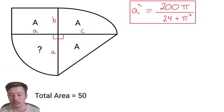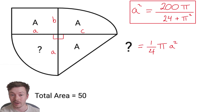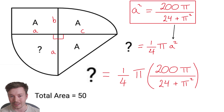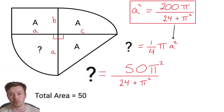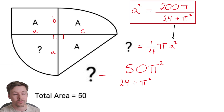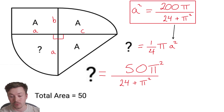The formula for the question mark — that's the bottom left quarter circle — is a quarter pi r squared, which in our case is a quarter pi times a squared. Substituting our expression for a squared gives a quarter pi times 200pi over (24 plus pi squared). Doing a quarter of 200 gives 50, and multiplying by pi gives the exact answer: 50 pi squared over (24 plus pi squared). As a decimal to two decimal places, that's 14.57.